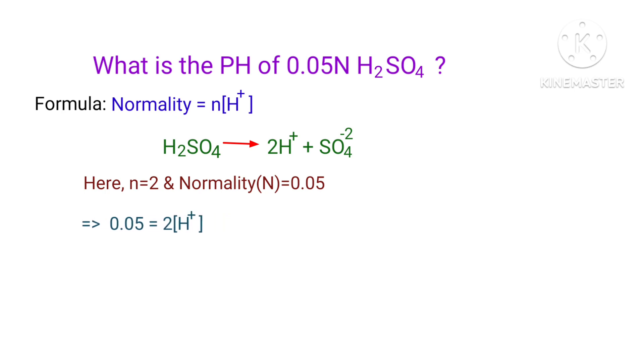So 0.05 equals 2 times H+. H+ equals 0.05 divided by 2, that equals 0.025.